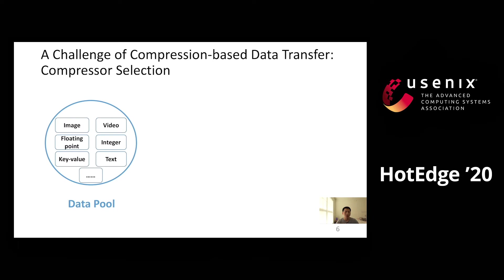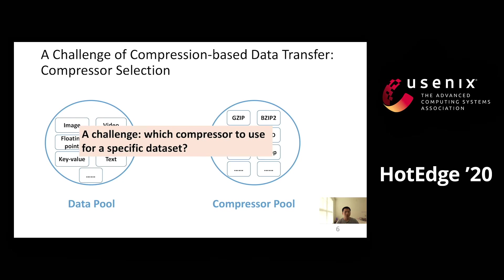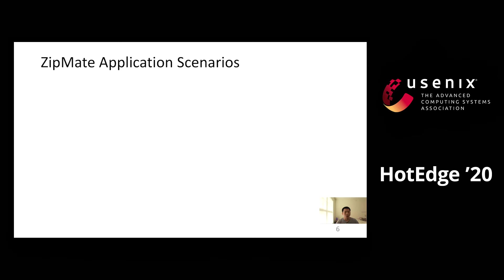In the IoT environment we have different types of files, like images, video, and other types. On the other hand, we have different compressor choices, and different compressors have different performance on different data. Therefore, the challenge is which compressor to use for a specific dataset. To solve this issue, we propose ZipMate, which implements a prediction model to adaptively select the best compressor for a specific dataset at runtime.